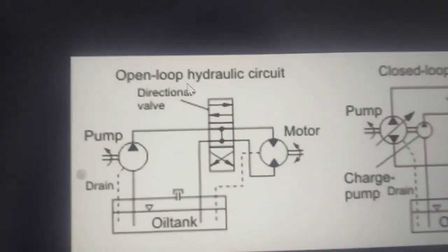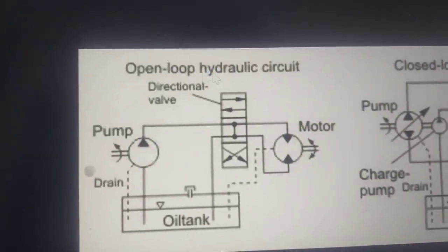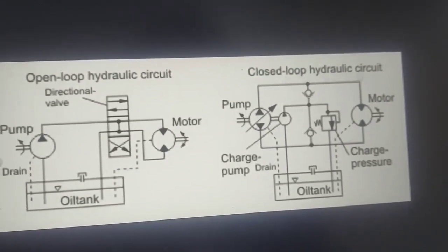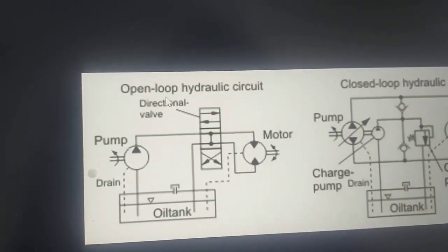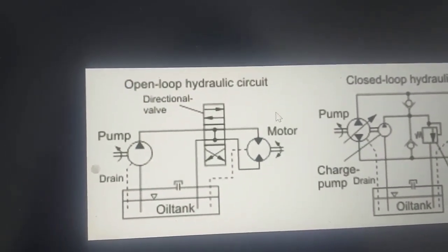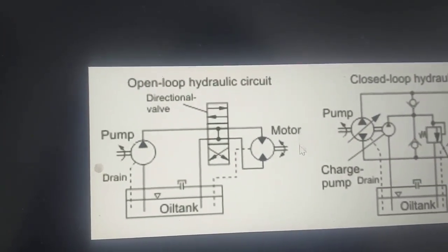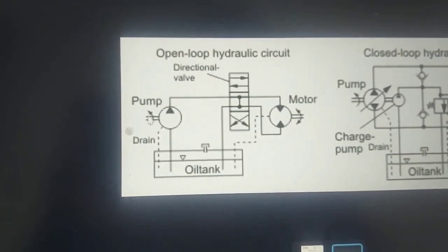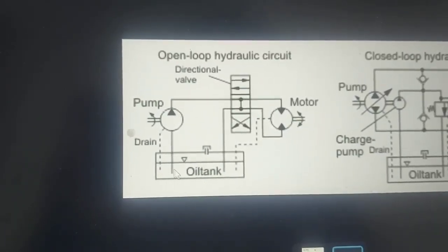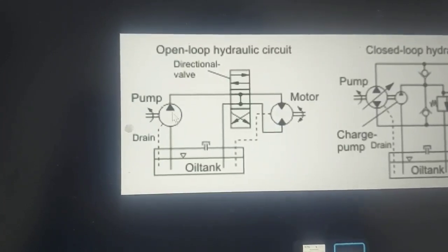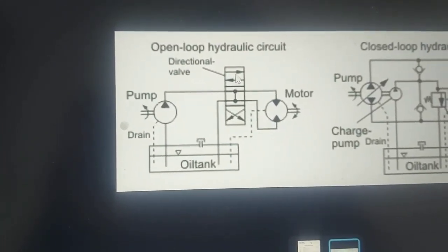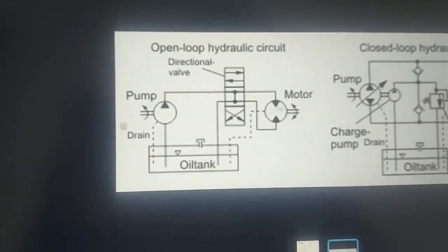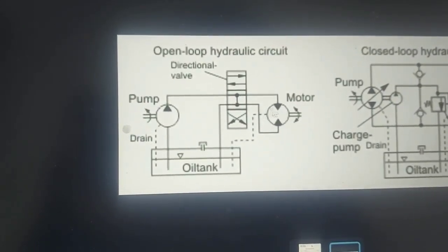We have two types of hydraulic system circuits: one is open loop circuit and one is closed loop circuit. I will show you how hydraulic oil circulates in each. In the open loop circuit, oil from the tank goes to the hydraulic pump, then to the traction control valve, and then flows to the hydraulic motor.